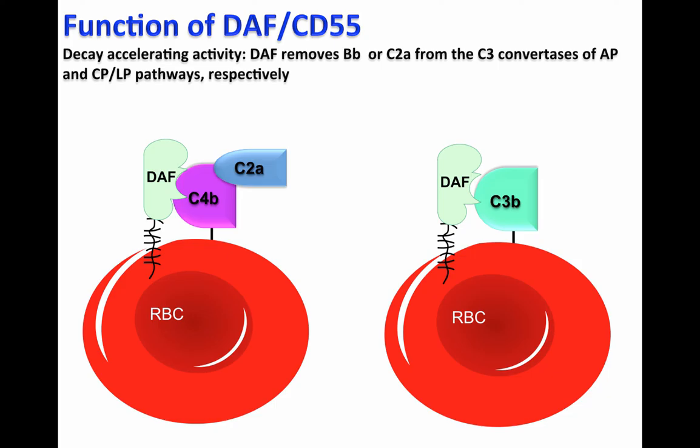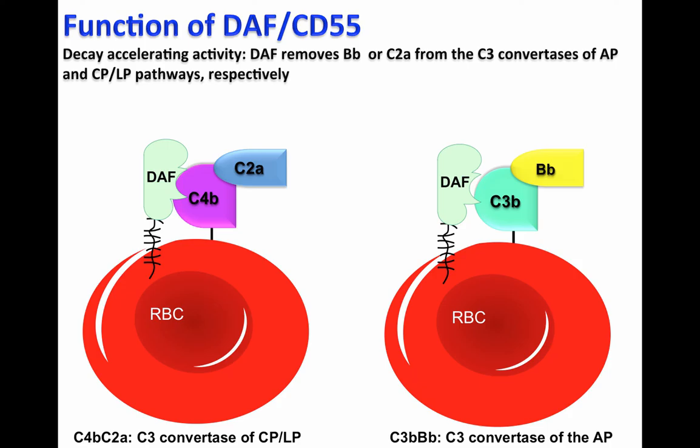Sometimes the C3 convertase of the classical and lectin pathway, C4b-C2a, or the C3 convertase of the alternative pathway, C3bBb, can be formed on the cell surface of red blood cells.